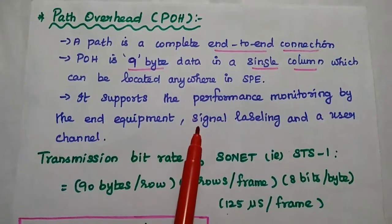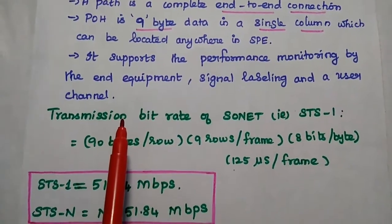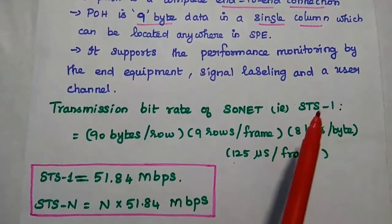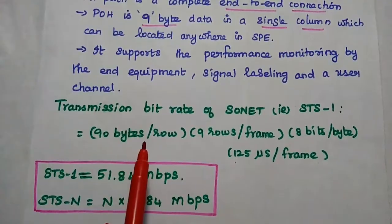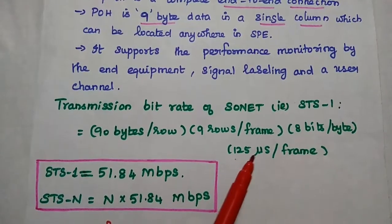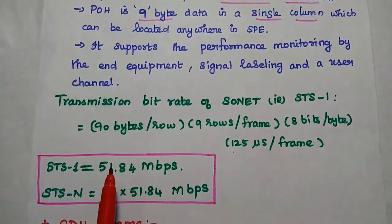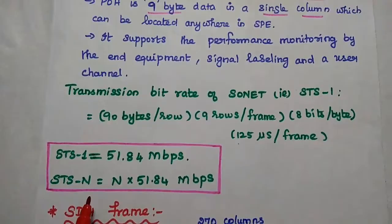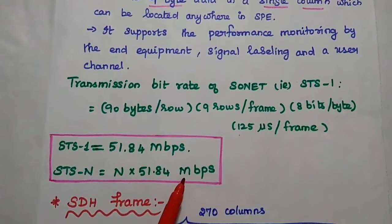Path overhead mainly supports performance monitoring by the end equipment, signal labeling, and user channel. To calculate the transmission bit rate of SONET at the fundamental level STS-1: with 90 columns, 9 rows, 8 bits per byte, and 125 microseconds per frame, we get the STS-1 transmission rate as 51.84 Mbps. For an N-level, STS-N = N × 51.84 Mbps.